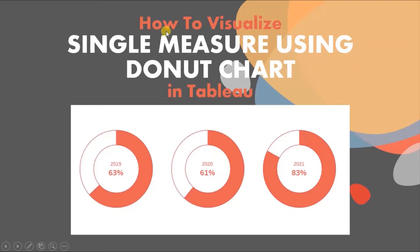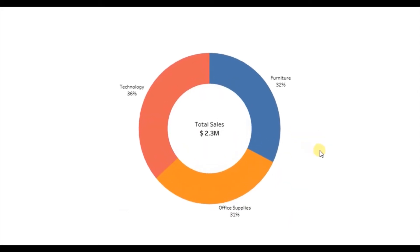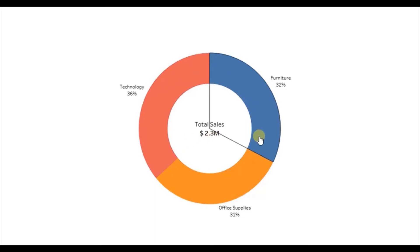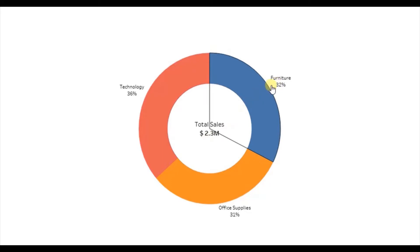In today's session we will see how to visualize a single measure using a donut chart in Tableau. We all know that donut charts are used to split a measure field into slices based on a dimension. Here the donut chart is splitting the total sales — that is 2.3 million dollars — into different slices based on a category dimension. We can infer that 32% is furniture, 31% is office supplies, and 36% is technology.